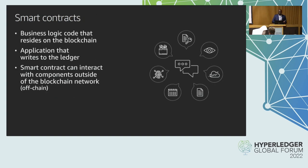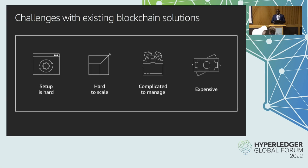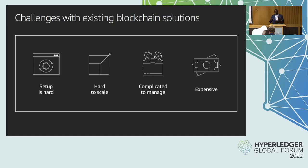Smart contracts are the business logic that resides on the blockchain — programs written in code that can be executed in a decentralized manner on the network. The challenges customers face include the fact that setting up a blockchain network is hard. When adding new members or growing your ledger, it becomes very hard to scale and more complicated to manage security, governance, and billing. A lot of customers start running blockchains on bare metal hardware and have to manage all the components themselves.